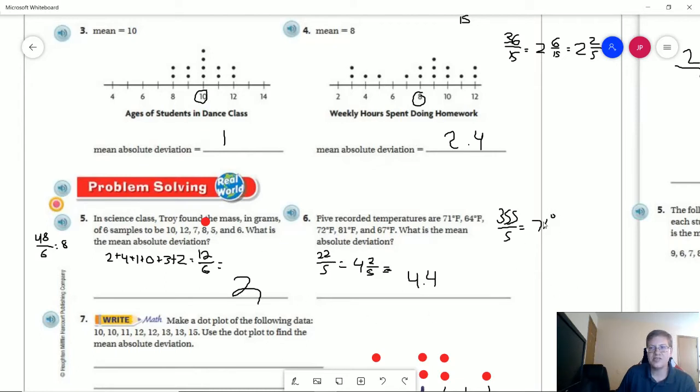For this one, we want to use degrees. I added all of these up, got 355. We're dividing by five data points, so our mean would be 71 degrees Fahrenheit, then we work the rest of it. We're 22 deviation points away from the mean divided by five data points, and that reduces to 4.4 degrees Fahrenheit.